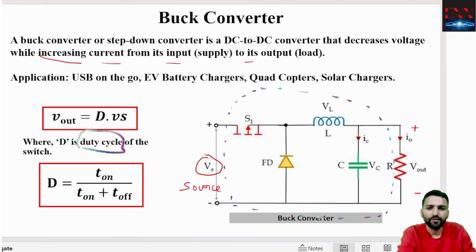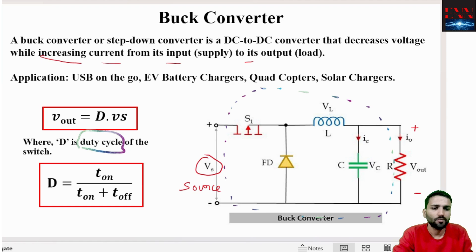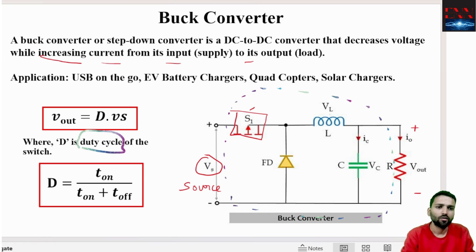What is duty cycle? Duty cycle is the ratio between the ON time and the total time of the switch S1. This switch can be a MOSFET, a transistor, or an IGBT depending on the power rating and the operating frequency of the buck converter. For example, if the switch is a MOSFET, its function is to turn ON and OFF the supply.